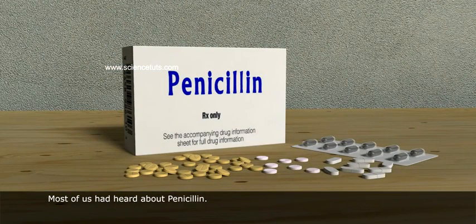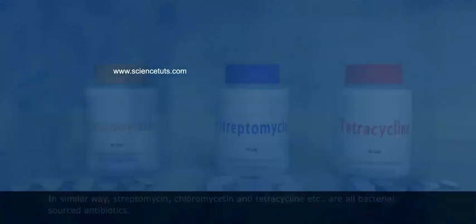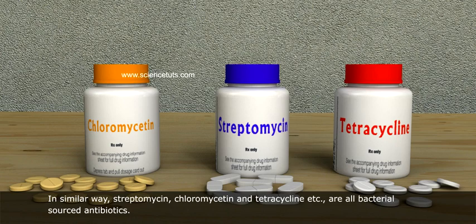Most of us have heard about penicillin. Penicillin is an antibiotic produced from bacterial sources. In a similar way, streptomycin, chloromycetine, and tetracycline, etc., are all bacterial-sourced antibiotics.